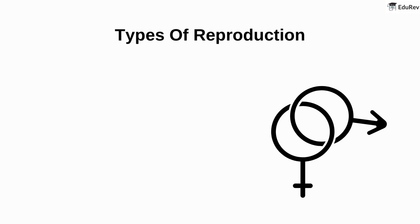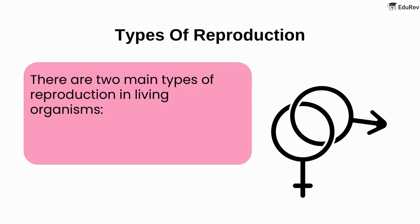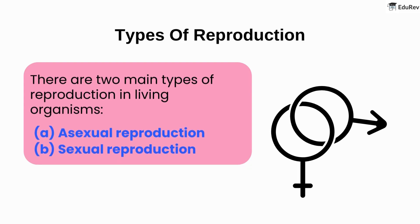There are two main types of reproduction in living organisms: asexual reproduction and sexual reproduction.